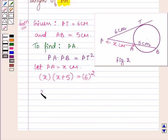So this is further equal to x squared plus 5x is equal to 36 or we have x squared plus 5x minus 36 is equal to 0.